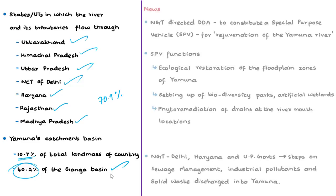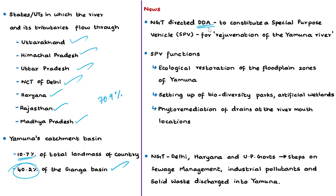The National Green Tribunal has directed the Delhi Development Authority to constitute a Special Purpose Vehicle within two weeks for rejuvenation of the Yamuna River. This decision is based on the report submitted by the Yamuna Monitoring Committee appointed by NGT in 2018, to monitor pollution control in the river from drains flowing from Delhi, Haryana, and Uttar Pradesh. The committee's report highlighted inadequate progress by the governments of Delhi, UP, and Haryana in complying with previous NGT orders.